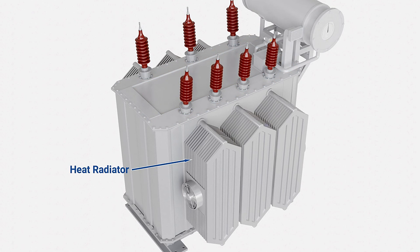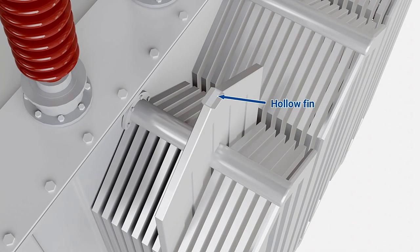Heat radiators are used in transformers to dissipate the heat. The radiator has multiple hollow fins, which spread the oil to a large surface area, thereby increasing the rate of heat dissipation.